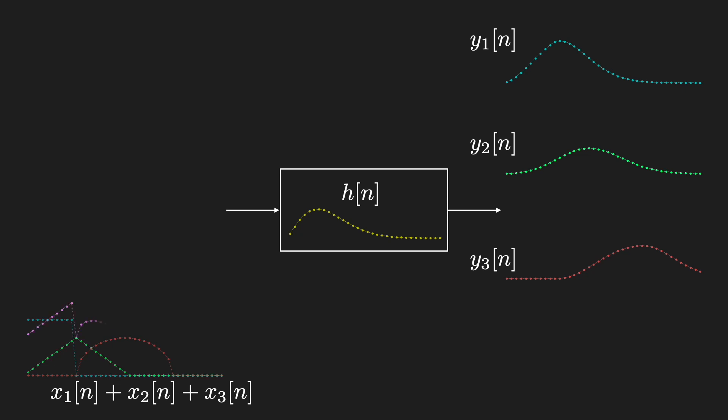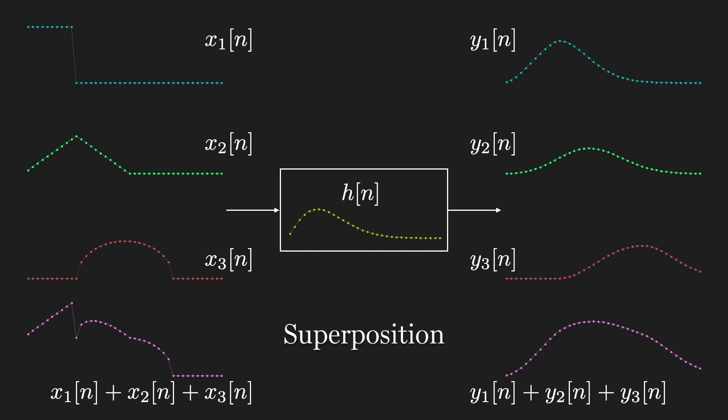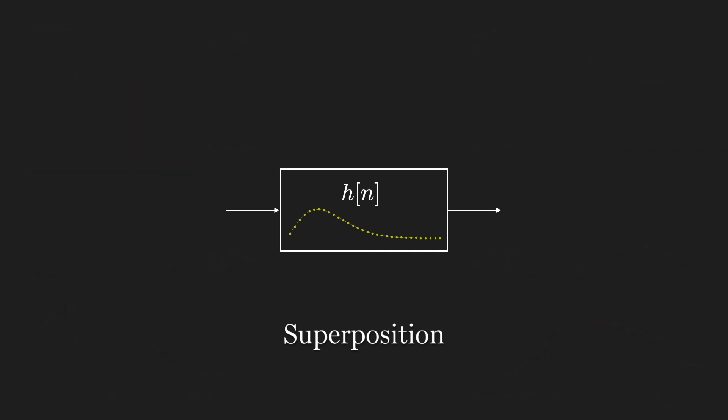If it's a linear system, then the output will be the sum of the individual outputs y1, y2, and y3. This property is called superposition, where adding input signals together results in superimposing the individual outputs. And this extends for any number of input signals x1 through xk, with known outputs y1 through yk.